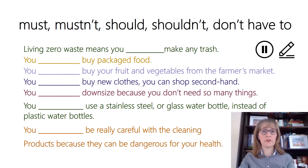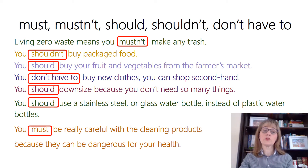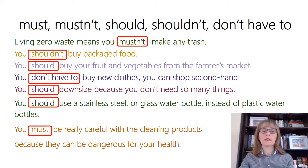Let's see how much you remember from the video and the quiz. Copy these sentences into your notebook, filling in the gaps with the appropriate modal verbs. What would you say to someone who wants to live a zero waste life? Let's check the answers. Living a zero waste life means you mustn't make any trash. You shouldn't buy packaged food. You should buy your fruit and vegetables from the farmers market. You don't have to buy new clothes — you can shop second hand. You should downsize as well. Also, you should use a stainless steel or glass water bottle instead of a plastic one. And in the end, you must be really careful when it comes to cleaning products — they can be dangerous to your health.